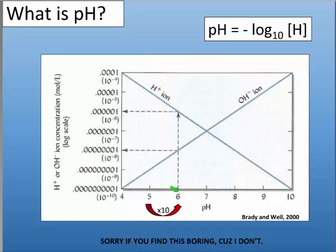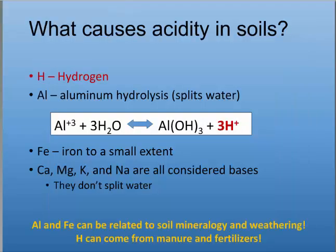As you drop in pH, you increase in acid concentration. What's important to know is that when you go from a pH of 7 to 6, that's a 10-times change, because that P is a negative log. So when you go from pH 7 to 6, you have 10 times more acidity than before, even though those numbers look really small.